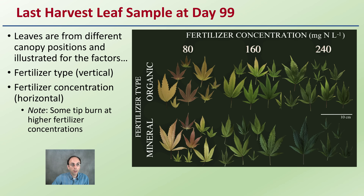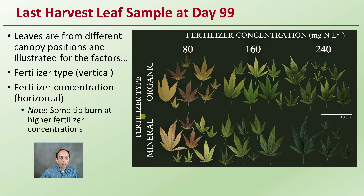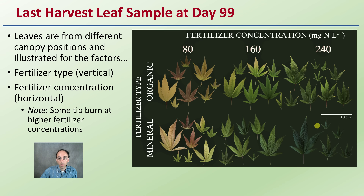Here is a late harvest leaf sample at day 99. Leaves from different canopy positions are illustrated for two factors: fertilizer type on the vertical axis and fertilizer concentration — 80, 160, and 240 — on the horizontal axis. Organic is in the top row and mineral in the bottom row. Note that there was some tip burn at the higher fertilizer concentrations, indicating some toxicity symptoms.